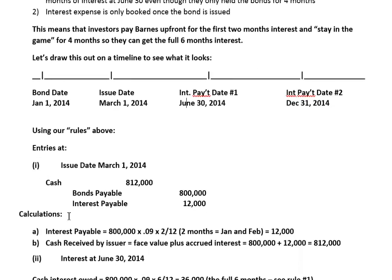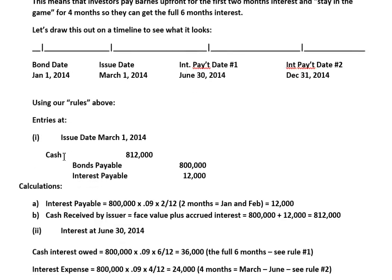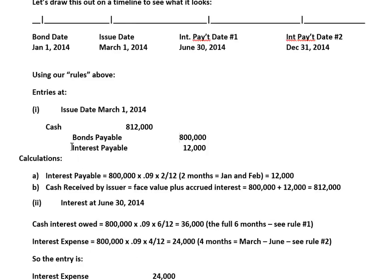Using our rules, our entries are going to be: at the issue date, we're going to debit cash for $812,000. We're going to credit bond payable — because we're doing Barnes's books and they have to pay back the investor $800,000. And then we have to record interest payable of $12,000. So you're probably wondering where these amounts come from.